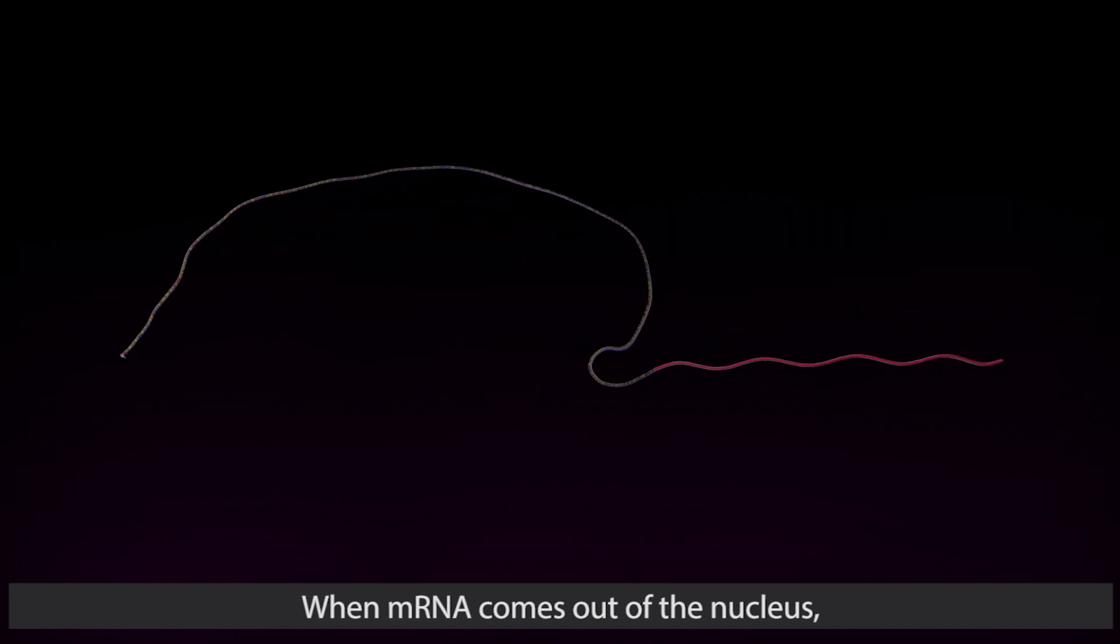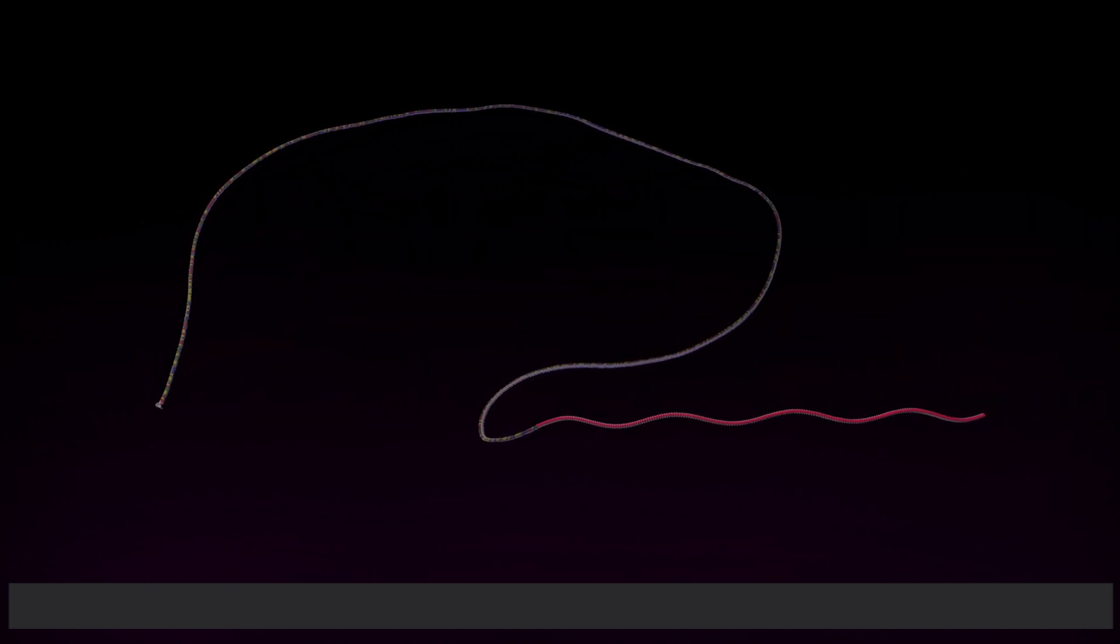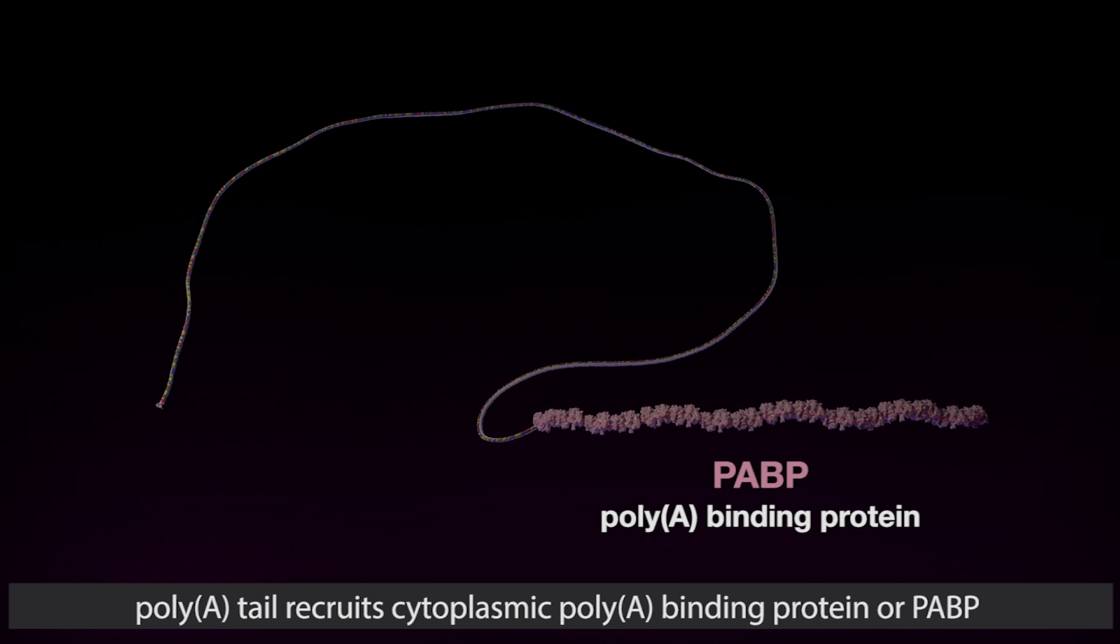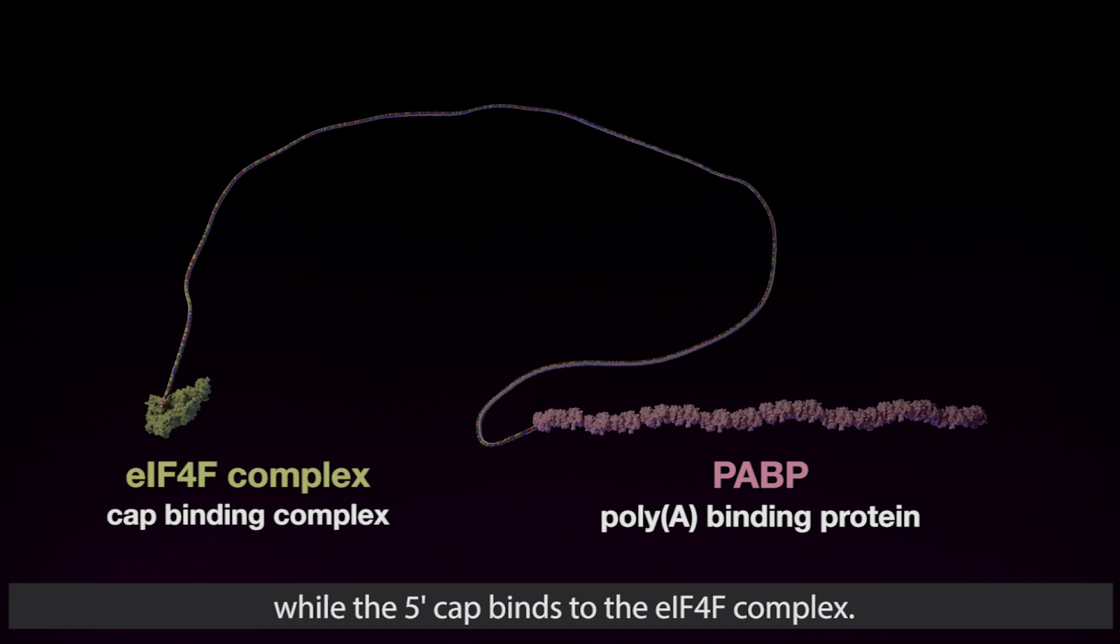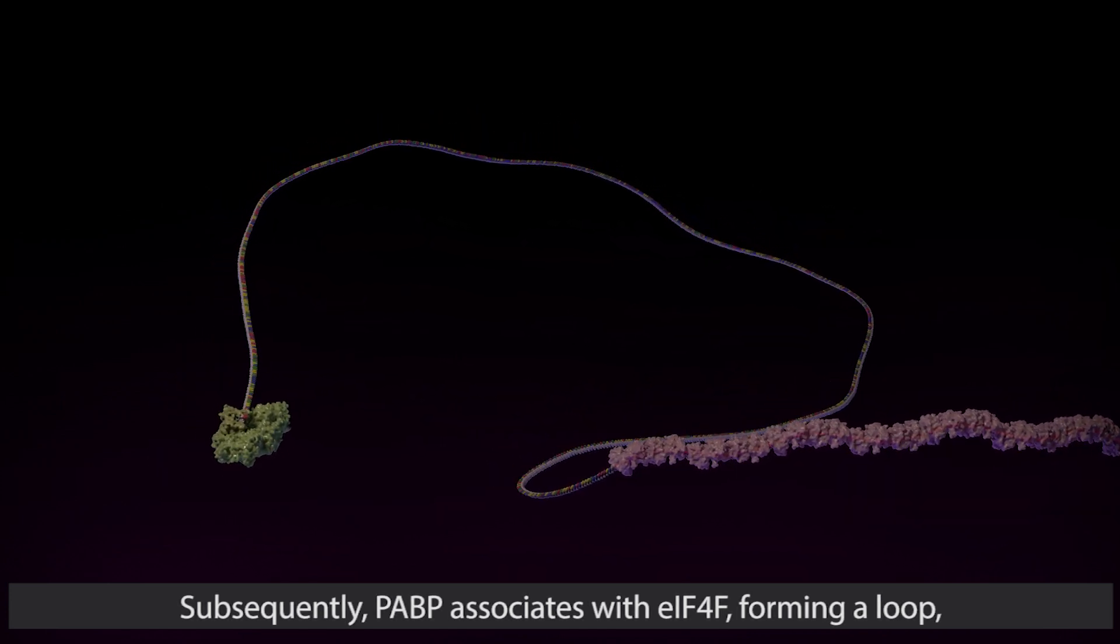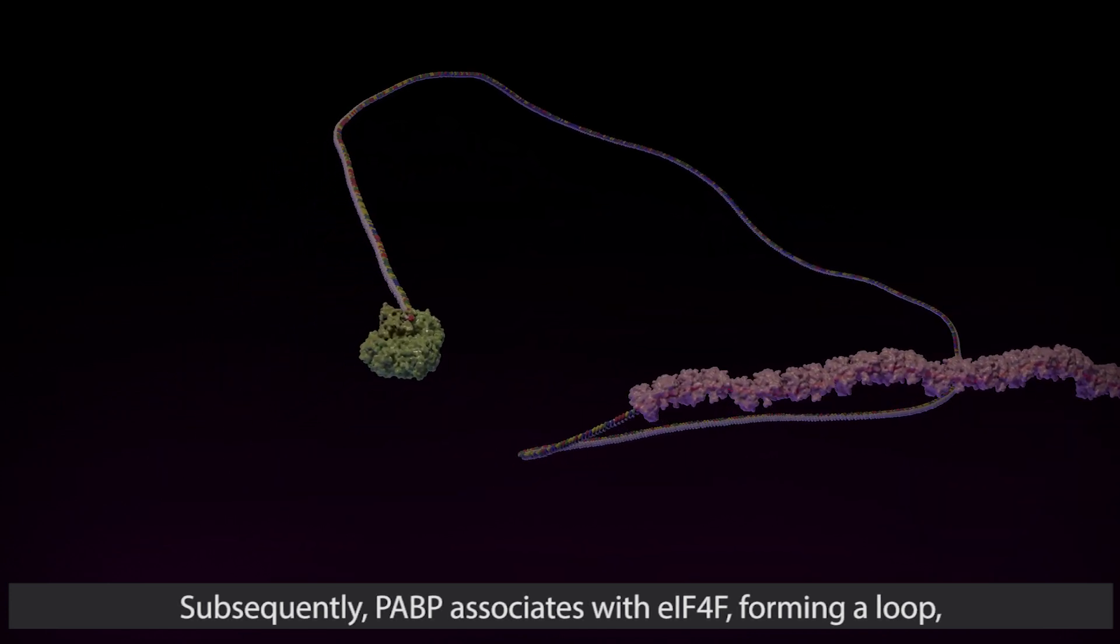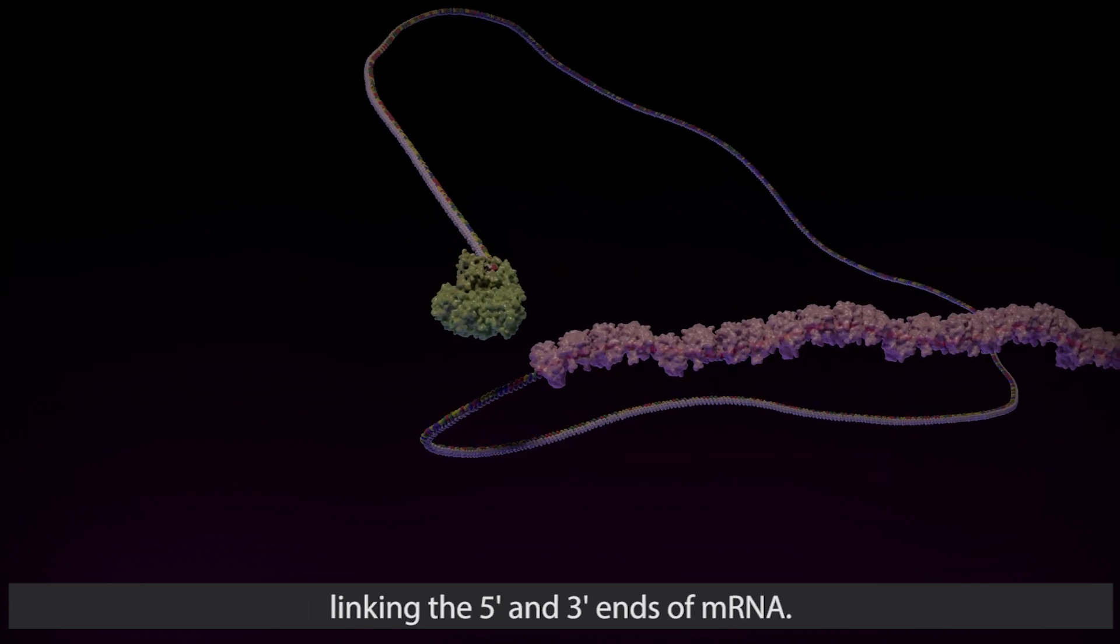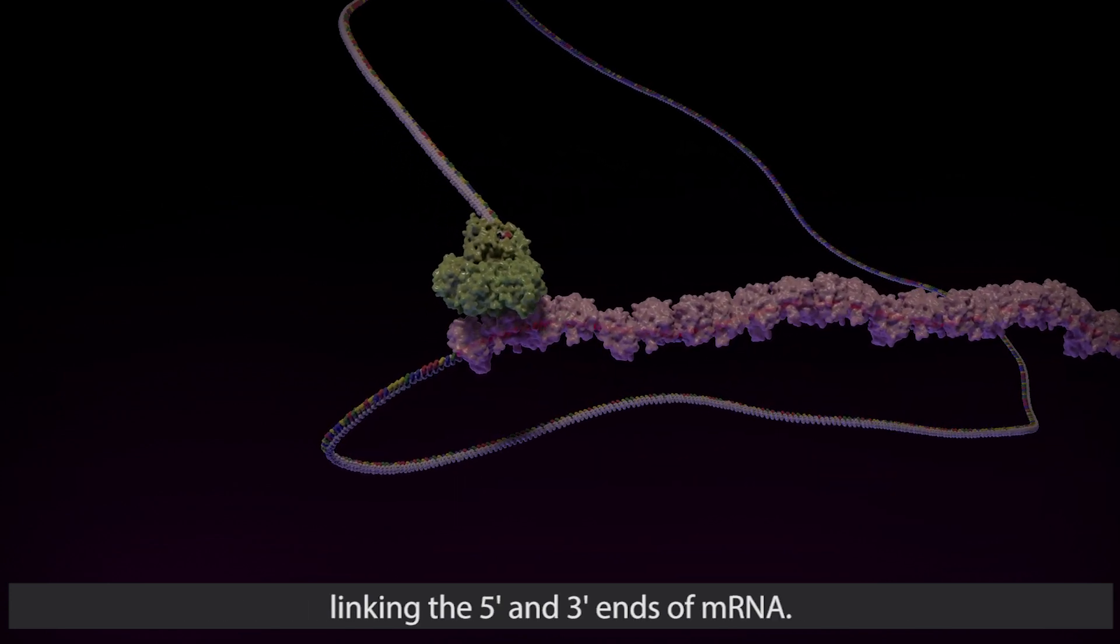When mRNA comes out of the nucleus, poly(A) tail recruits cytoplasmic poly(A) binding protein or PABP, while the 5' cap binds to the eIF4F complex. Subsequently, PABP associates with eIF4F forming a loop linking the 5' and 3' ends of mRNA.